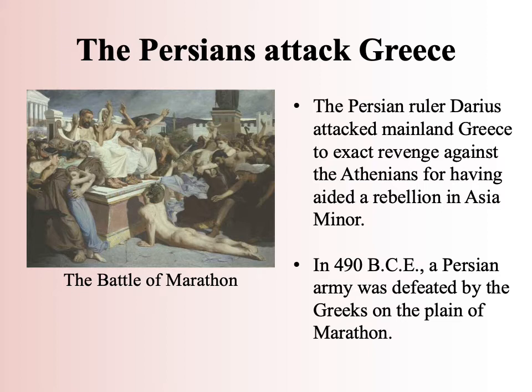The decisive battle was the Battle of Marathon, which took place in 490 BCE, and the Persian army was soundly defeated by the Greeks. The word 'marathon' referring to a 26-mile-long race takes its name from the plain of Marathon where this battle took place, because after the Greek victory a messenger ran roughly 26 miles from Marathon to Athens to report on the victory. He ran so fast and so hard that he actually died as soon as he got to Athens — that scene is depicted in a painting shown here.